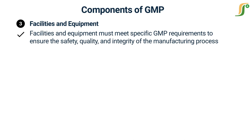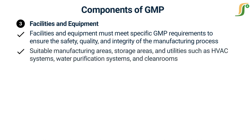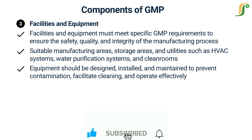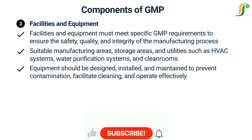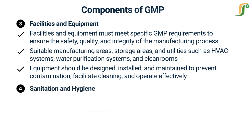The third component is Facilities and Equipment. Facilities and equipment must meet specific GMP requirements to ensure the safety, quality, and integrity of the manufacturing process. This includes having suitable manufacturing areas, storage areas, and utilities such as HVAC systems, water purification systems, and clean rooms. Equipment used in manufacturing should be designed, installed, and maintained to prevent contamination, facilitate cleaning, and operate effectively.